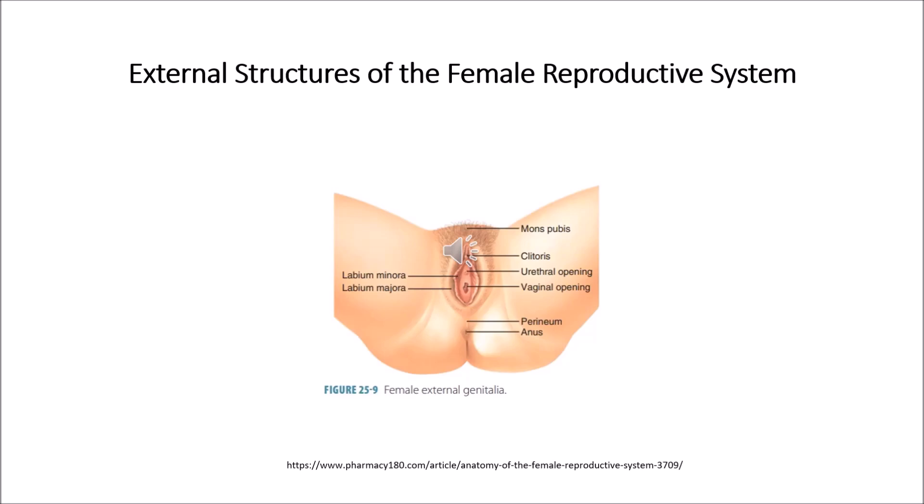The next part is the labia minora. The labia minora can have a variety of sizes and shapes. They lie just inside the labia majora and surround the opening of the vagina and the urethra. This skin is very delicate and can be easily irritated and swollen.